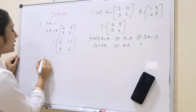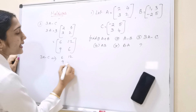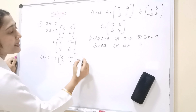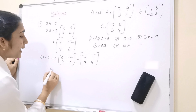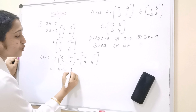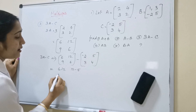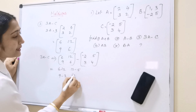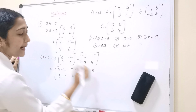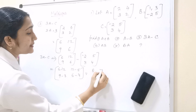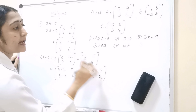Next we have to find 3A minus C. So 3A minus C: 3A is [6, 12; 9, 6] minus C which is [-2, 5; 3, 4]. That gives us: 6 minus (-2) is 6 plus 2 equals 8, 12 minus 5 is 7, 9 minus 3 is 6, 6 minus 4 is 2. So 3A minus C equals [8, 7; 6, 2].